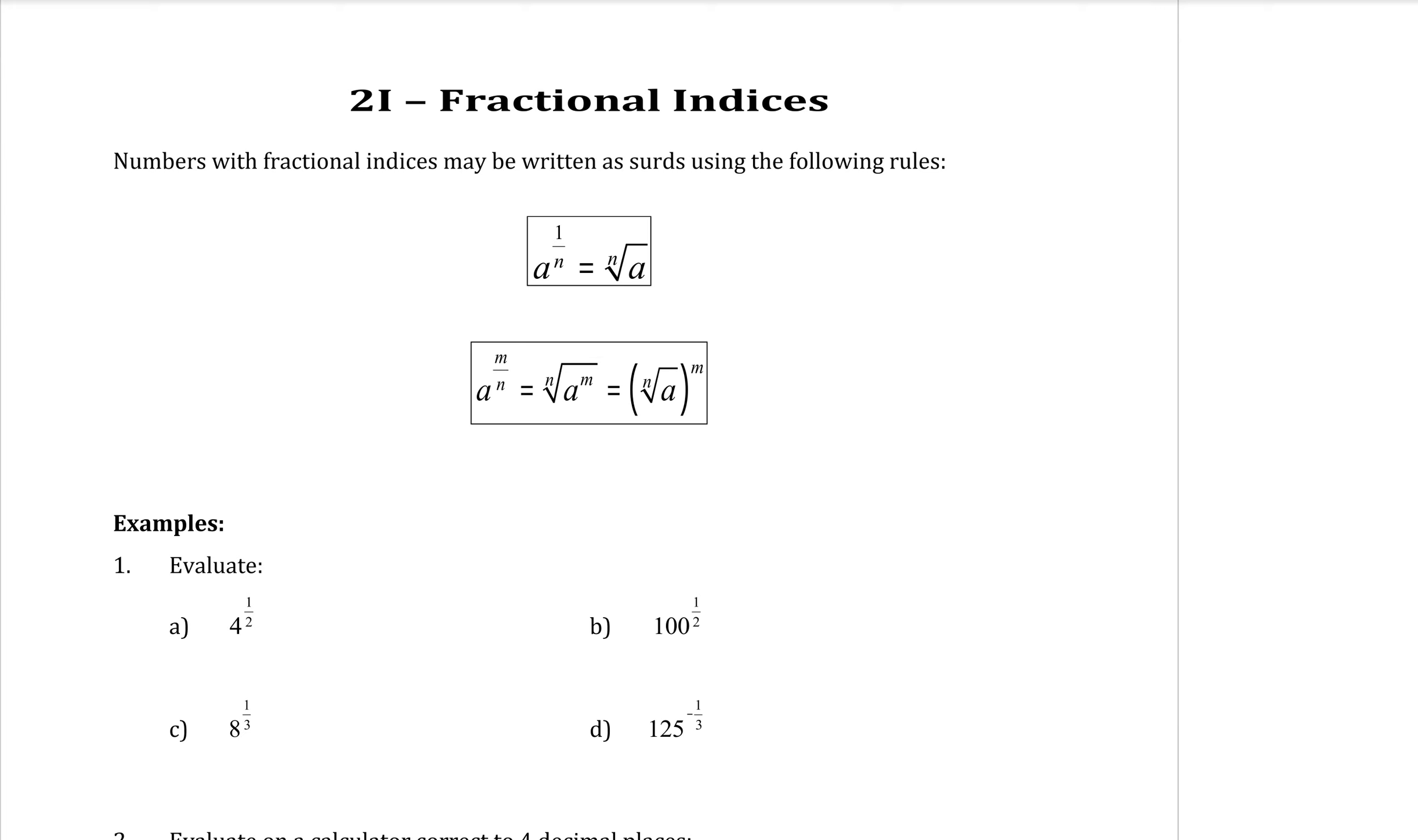Whatever number is on the bottom of that fraction tells you what type of square root you have. So if it was a 2 here, it would be a normal square root. If it's a 3 here, it's a cubed root. You put a 3 out the front. If it was a 4 there, it'd be a fourth root. Whatever that number is, is the type of square root. The base here goes underneath that square root sign.